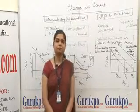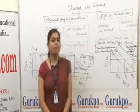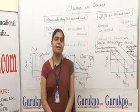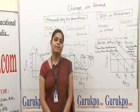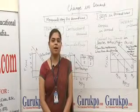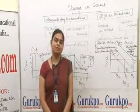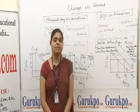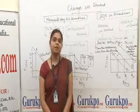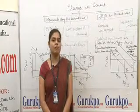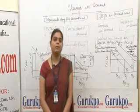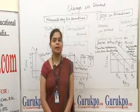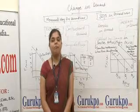When the price falls and demand increases, it is called the extension of demand. When the price increases and demand of a commodity falls, then it is known as a contraction of demand.